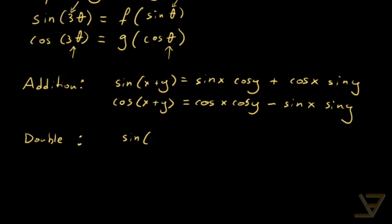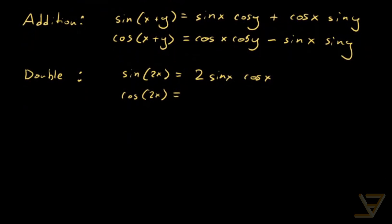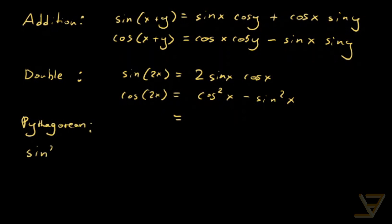We get sine of 2x is equal to 2 sin x cos x. And cos of 2x has a few forms: cos squared x minus sin squared x, or using the Pythagorean identity — sin squared x plus cos squared x equals 1 — we can also write it as 2 cos squared x minus 1, or 1 minus 2 sin squared x.